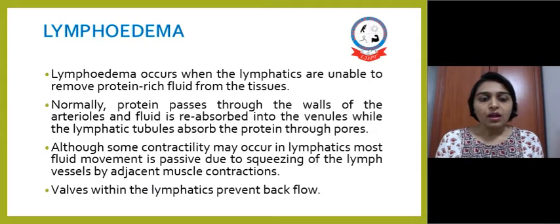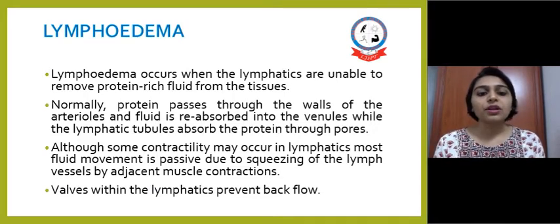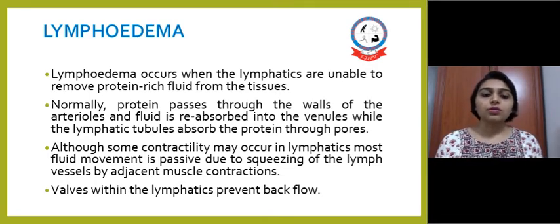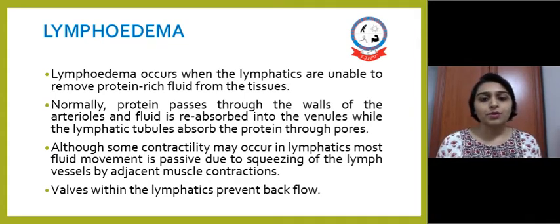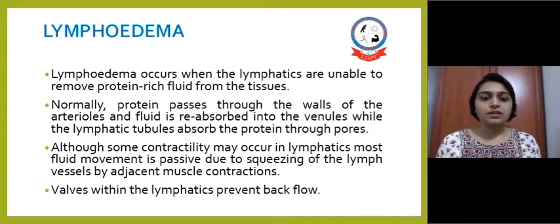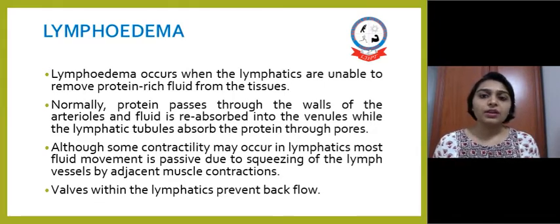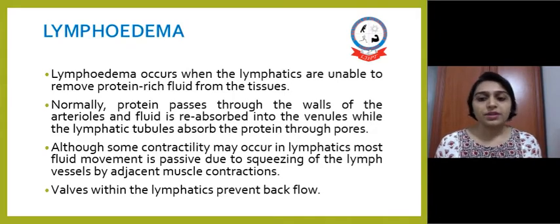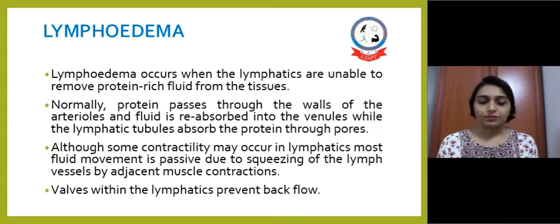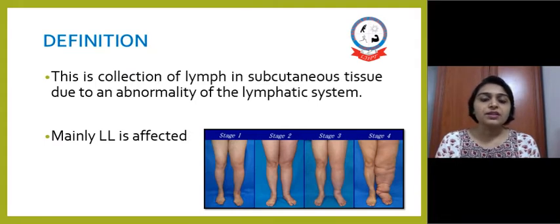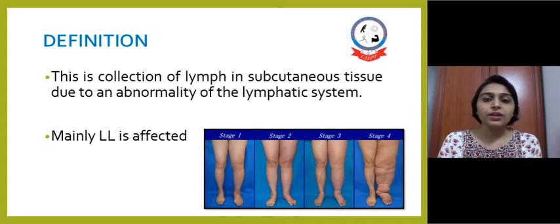Lymphedema occurs when lymphatics are unable to remove protein-rich fluid from the tissue normally. Normally, protein passes through the walls of the arterioles and the fluid is reabsorbed into the venules, while the lymphatic tubules absorb the remaining protein particles through pores. The lymphatic system works as a passive movement — fluid moves due to squeezing of lymph vessels between adjacent muscle contractions. The lymph vessels also possess some contractility and have valves which prevent backflow. Lymphedema is defined as a collection of lymph in subcutaneous tissue due to an abnormality of the lymphatic system.